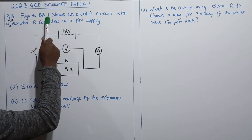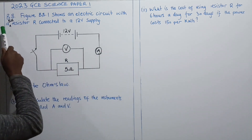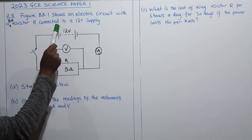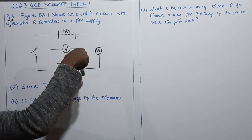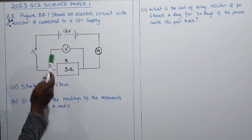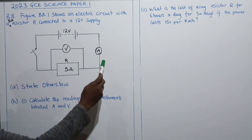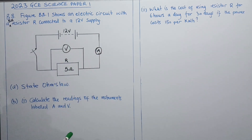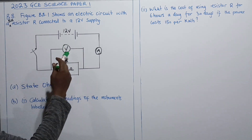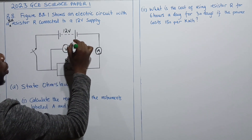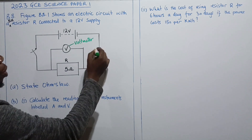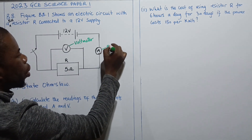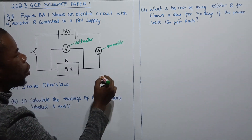The question reads: Figure B8.1 shows an electric circuit with a 5 ohm resistor connected to a 12 volt supply. We have to study this figure before answering. The component with a V in a circle is a voltmeter, which measures voltage, and the one with an A inside a circle is an ammeter, which measures current.